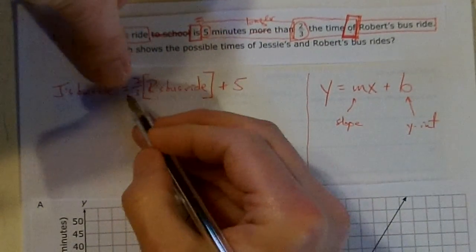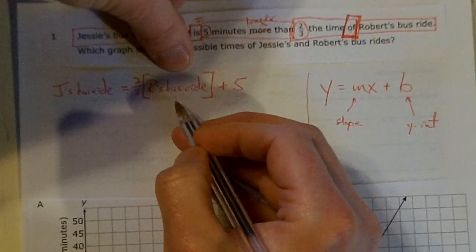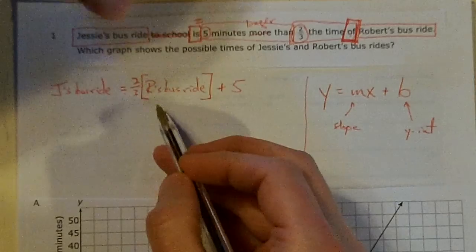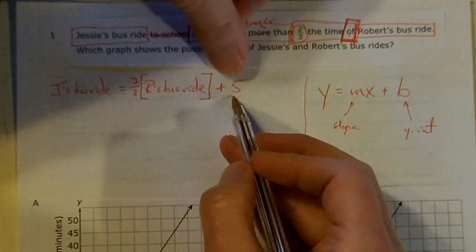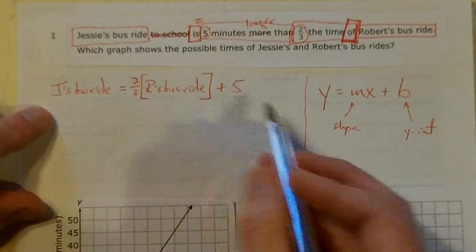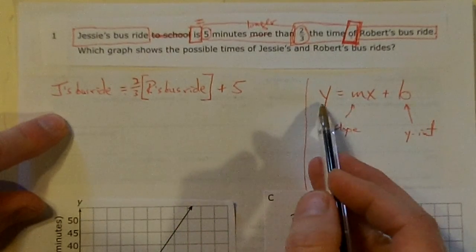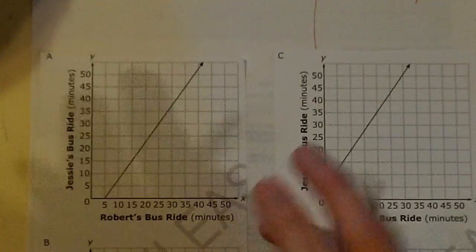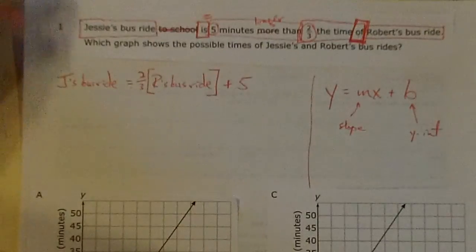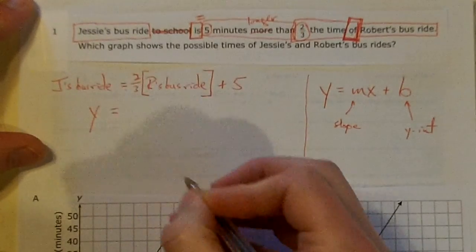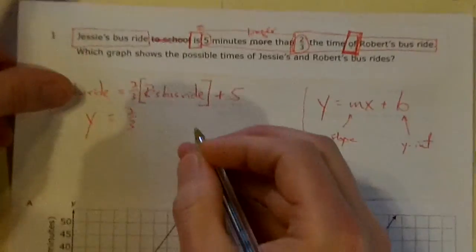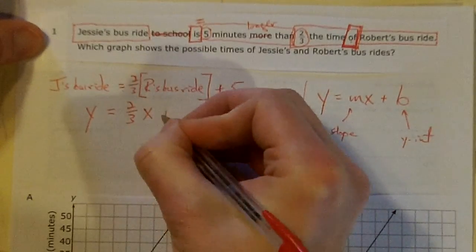Now my equation says Jesse's bus ride equals two-thirds times Robert's bus ride plus five. Jesse's bus ride is five minutes longer than two-thirds the time of Robert's bus ride. I can make it look like slope-intercept form by noting that Jesse's bus ride is my y variable and Robert's bus ride is my x variable. So: y equals two-thirds x plus five — the equation of a straight line in slope-intercept form.